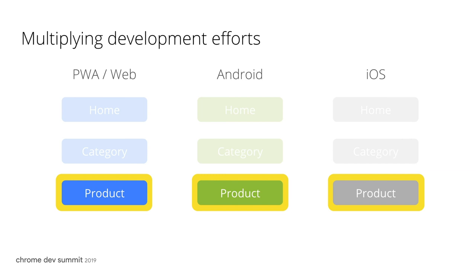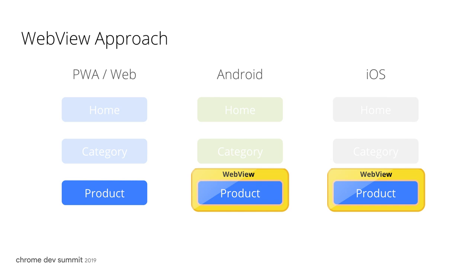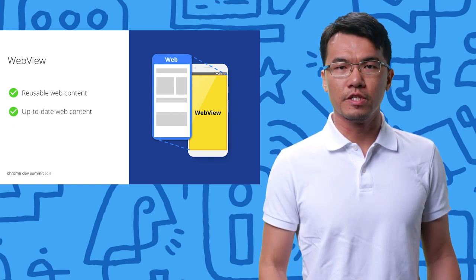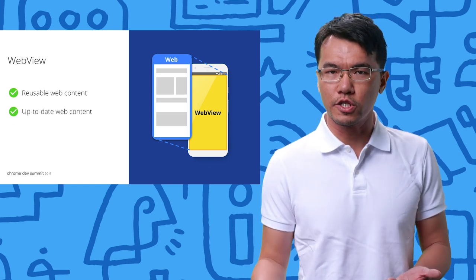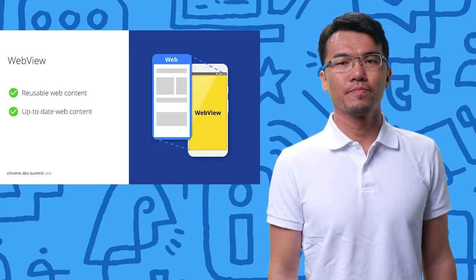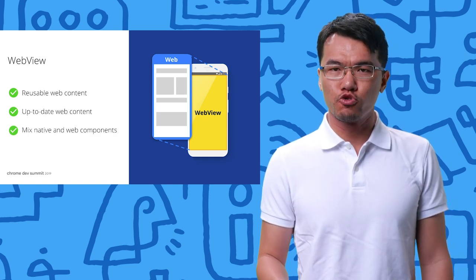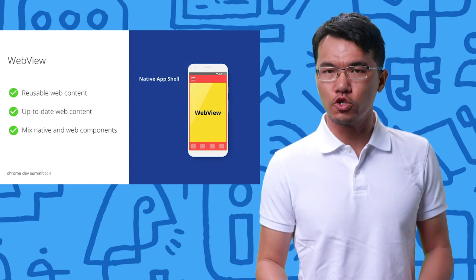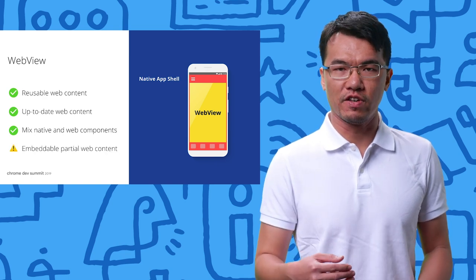So what can we do? Since the product page would have similar functionalities and layout across platforms, you may consider using a web view as a container in the Android and iOS apps to embed existing web content, just like a mini-browser inside the app. In addition to reusable web content, there are other advantages of using the web view. It is easy to keep the web content up to date without going through the app deployment process. You may also mix native controls with web content — for example, you can embed the product page inside the app while keeping native controls like the navigation bar.